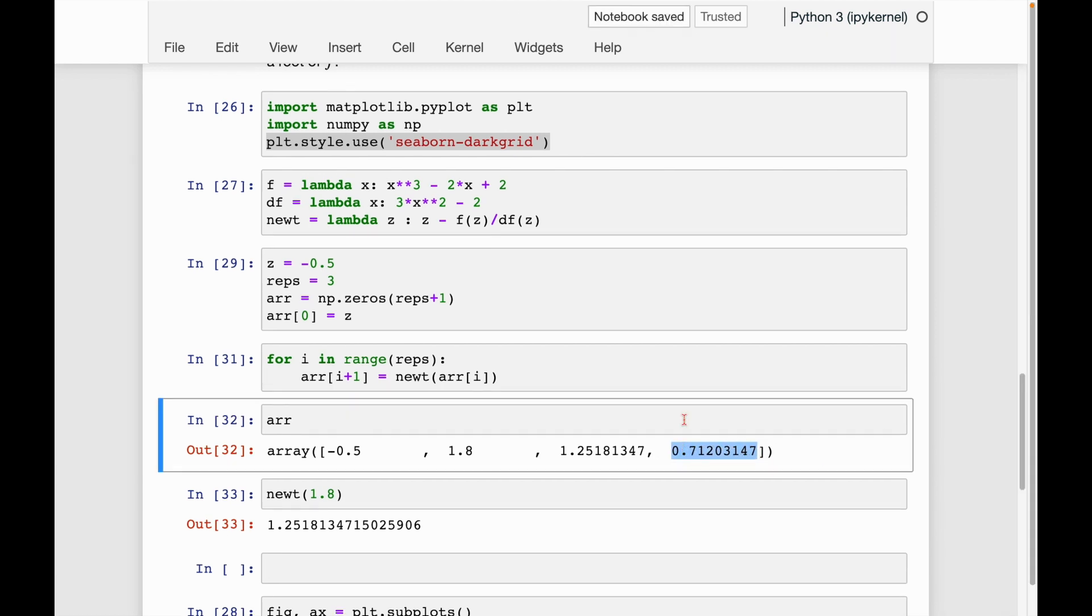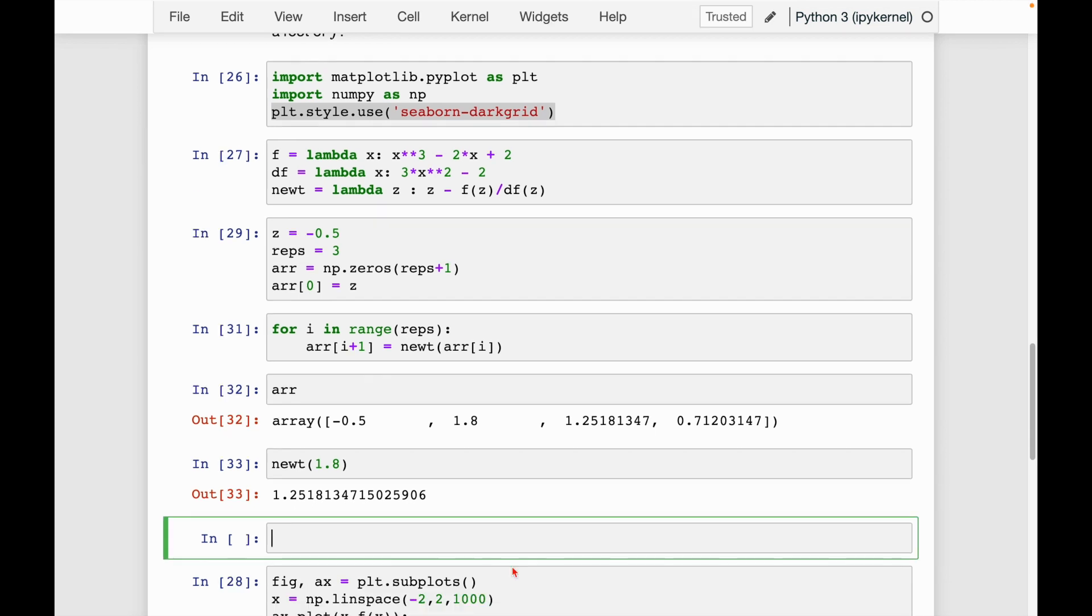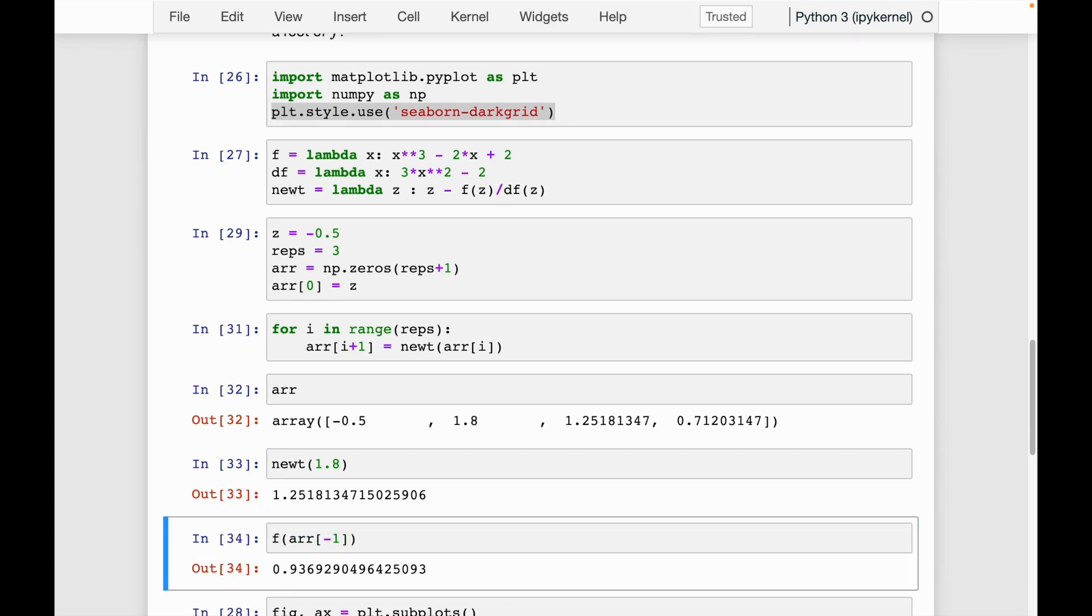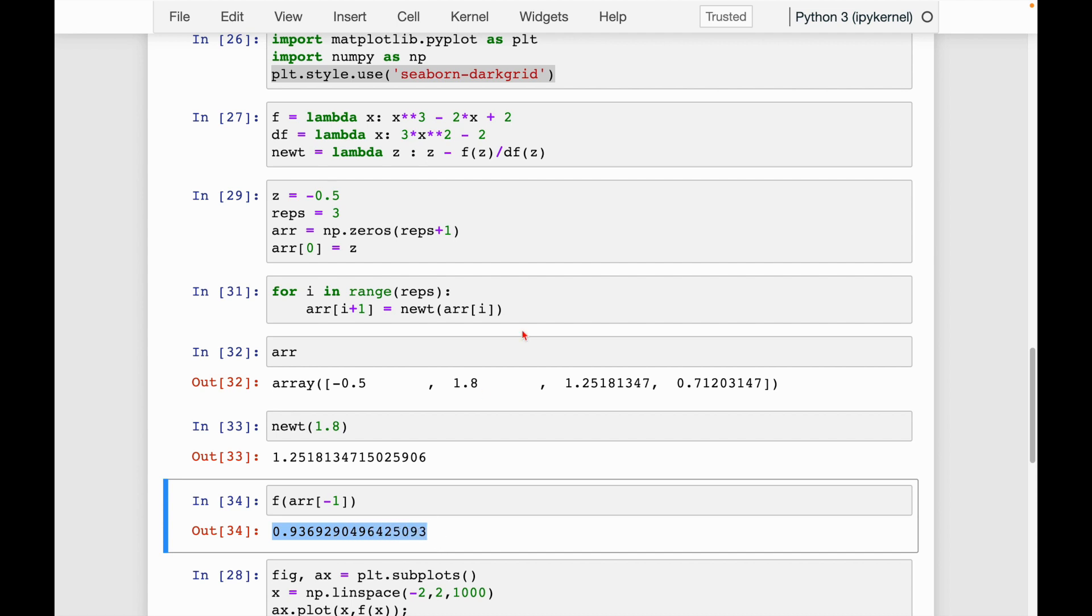And to see how Newton's method approximated here, let's evaluate our function f at this point. So I'm going to say f of arr, take the last element. And we can see here it's negative 0.93692.